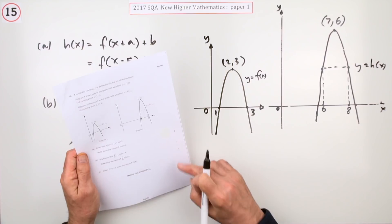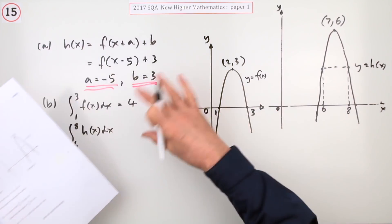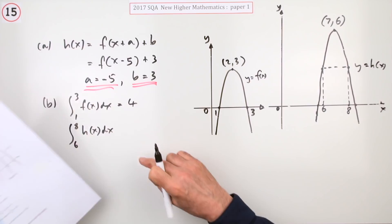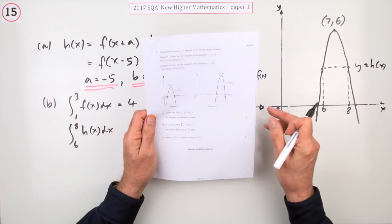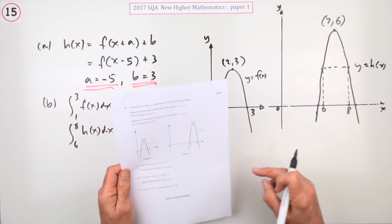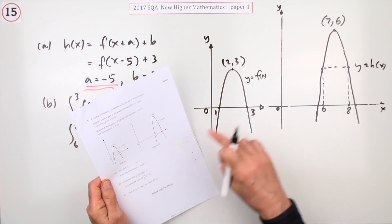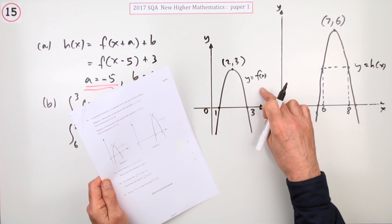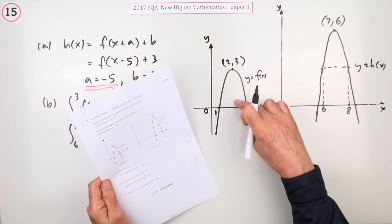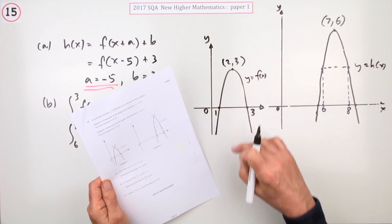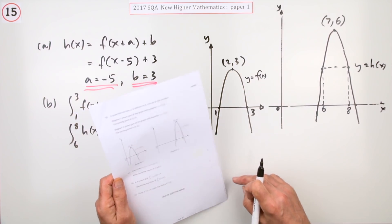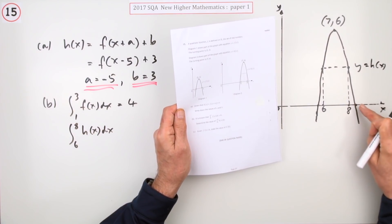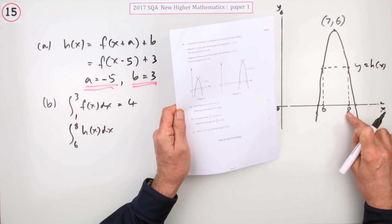Now for part b, there's only one mark here. Someone's gone to an awful lot of trouble to construct this question, especially this little part here. It's only going to get one mark for all their efforts. It says if it's known that the integral from 1 to 3 of f(x), so I would interpret as this area in here, is equal to 4.